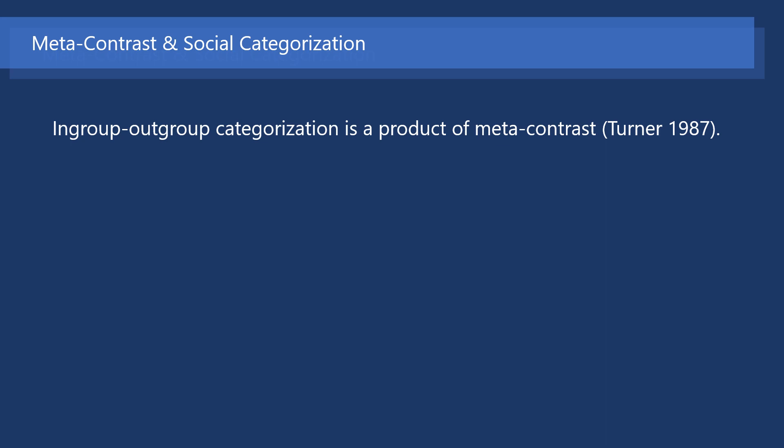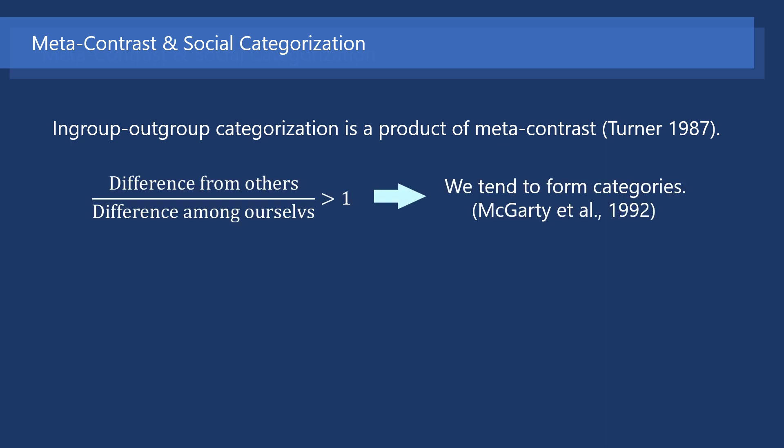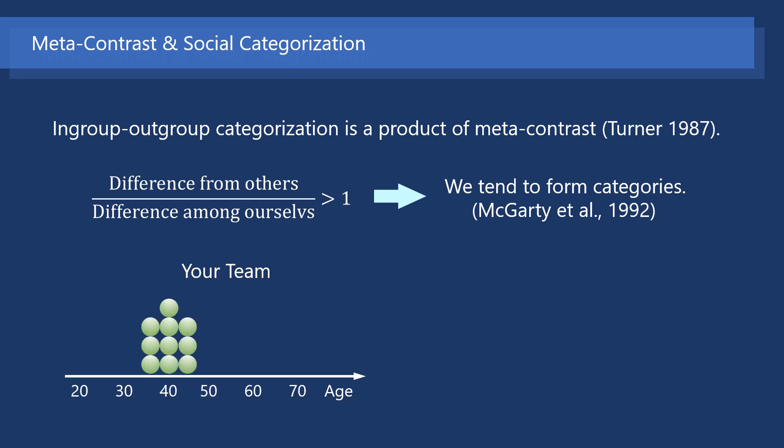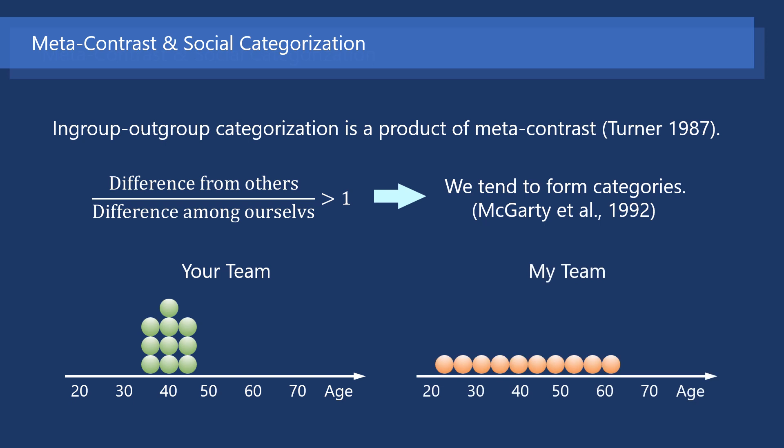As Turner proposed, in-group/out-group categorization is a product of meta-contrast. Specifically, people tend to categorize a collection of stimuli as a group when they perceive the intra-group differences in the stimuli are less than inter-group differences. So, if this ratio is greater than 1, we tend to form categories. Suppose you work in a team with an average age of 40, and I'm a member of another team with the same average age of 40. However, age is more widely dispersed in my team. In such a case, you are likely to categorize your team as a middle-aged team.